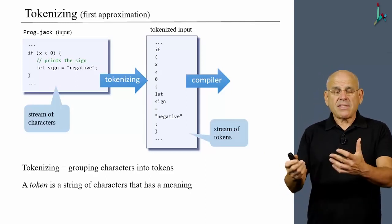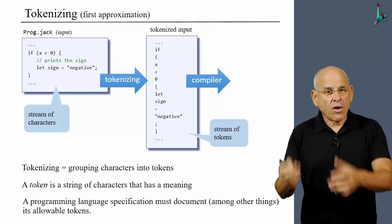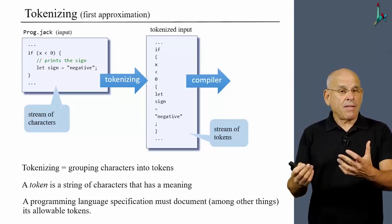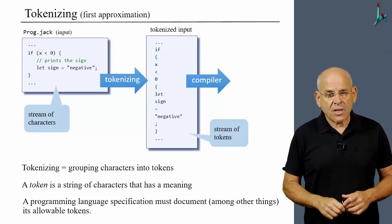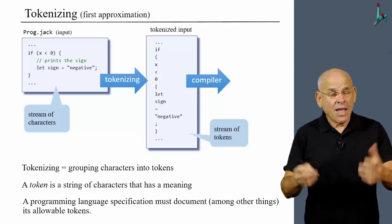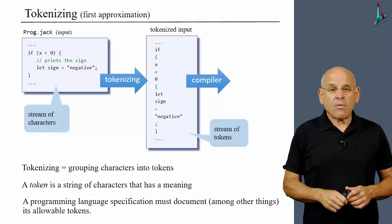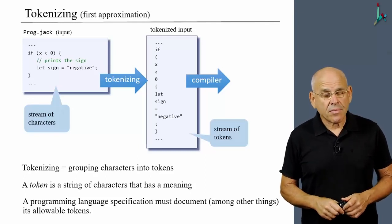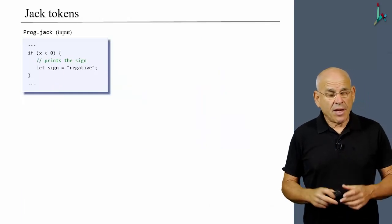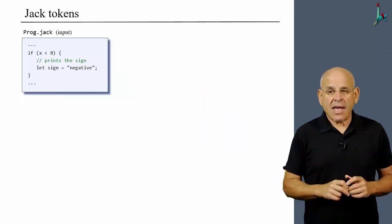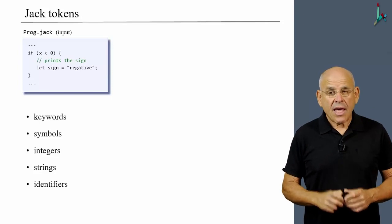So if you have the task of writing a tokenizer, you should demand to get a very well-specified documentation that says, what does it take to be a token in the language that I'm trying to analyze? And so in the Jack language specifically, we have five categories of tokens.